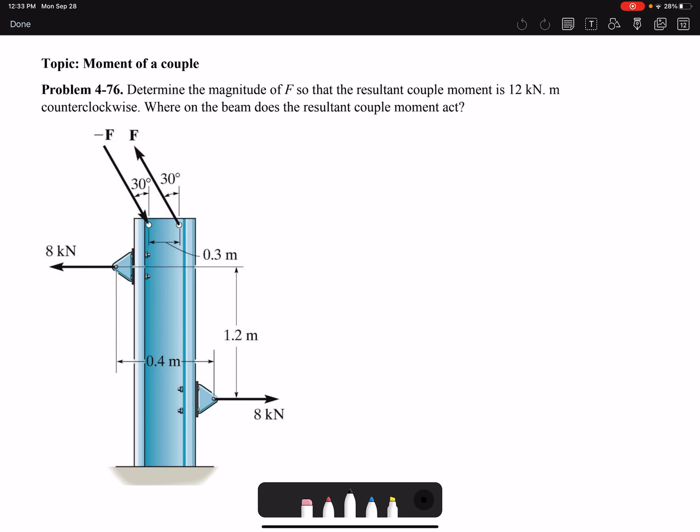So the question has two parts. The first part is asking for the magnitude of the force F if the resultant moment would be 12 kilonewton meter measured counterclockwise. We have two couples here: one is the 8 kilonewton, and then the other one is F.